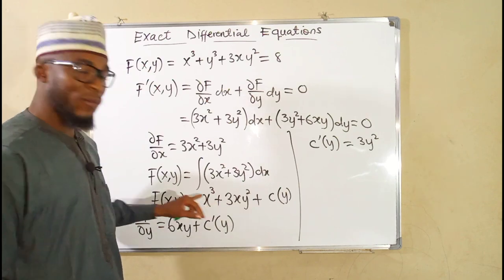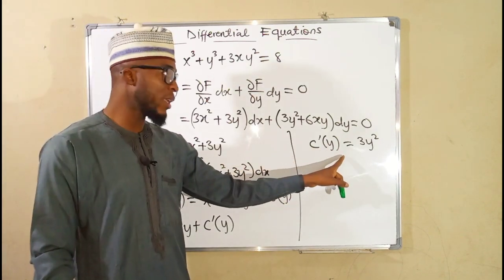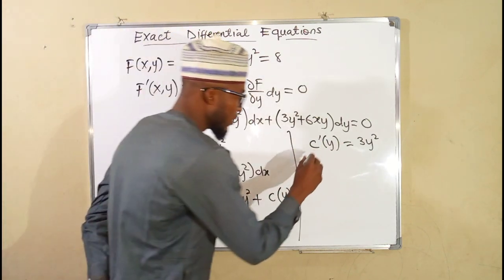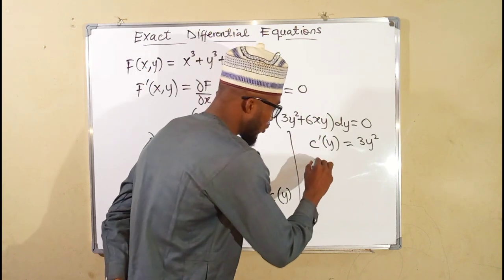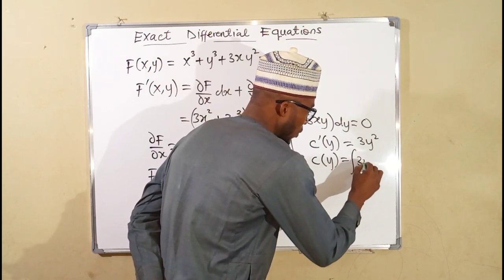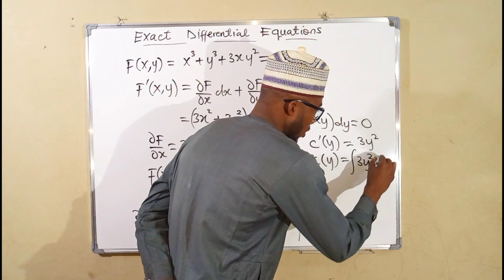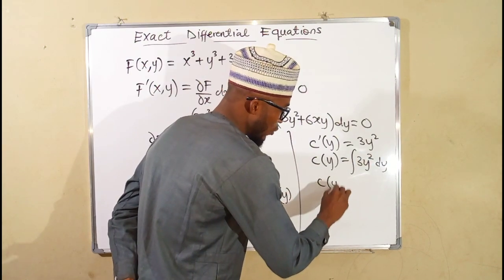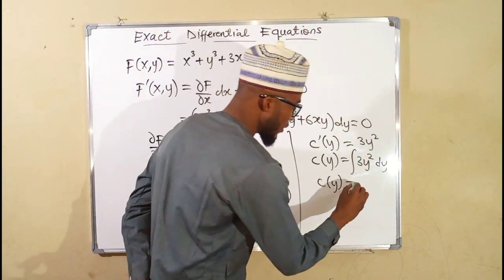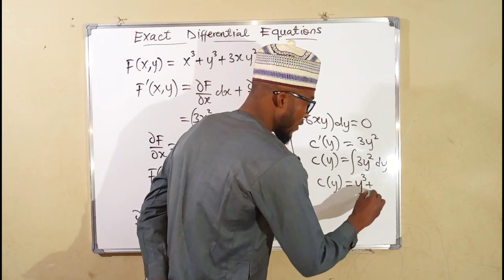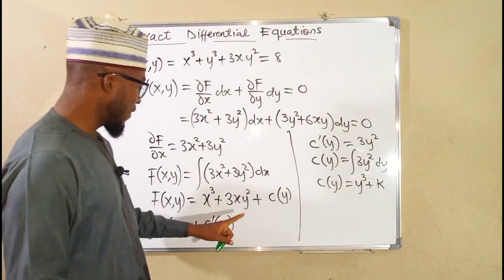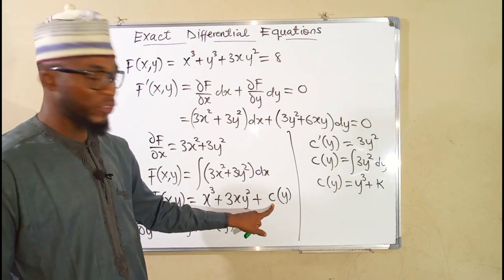What we need to complete our function is c(y), not c prime of y, so we integrate both sides with respect to y. Integrating the left side gives c(y). Integrating 3y squared with respect to y: the power increases by 1 making 3, divided by 3 cancels, giving y cubed. So c(y) equals y cubed plus k, where k is another constant of integration.